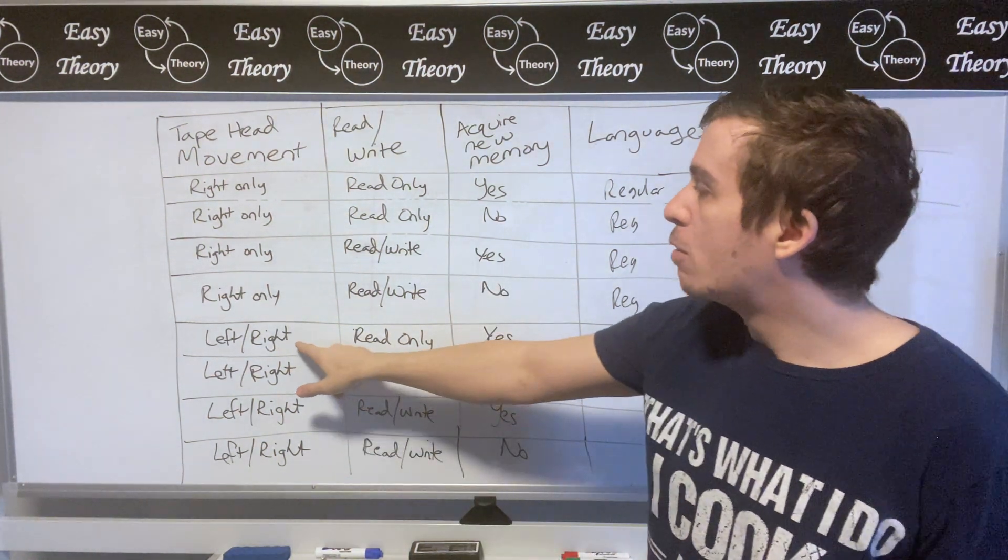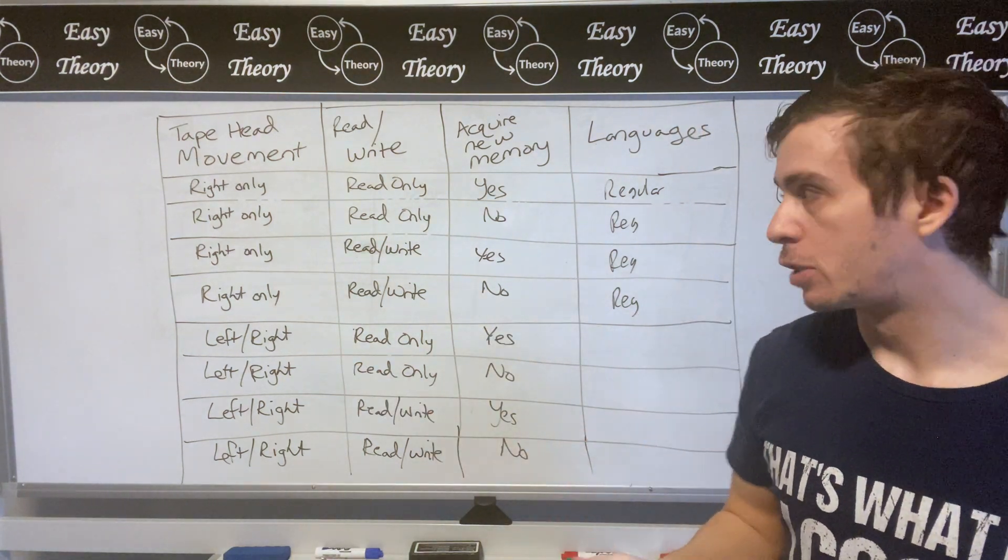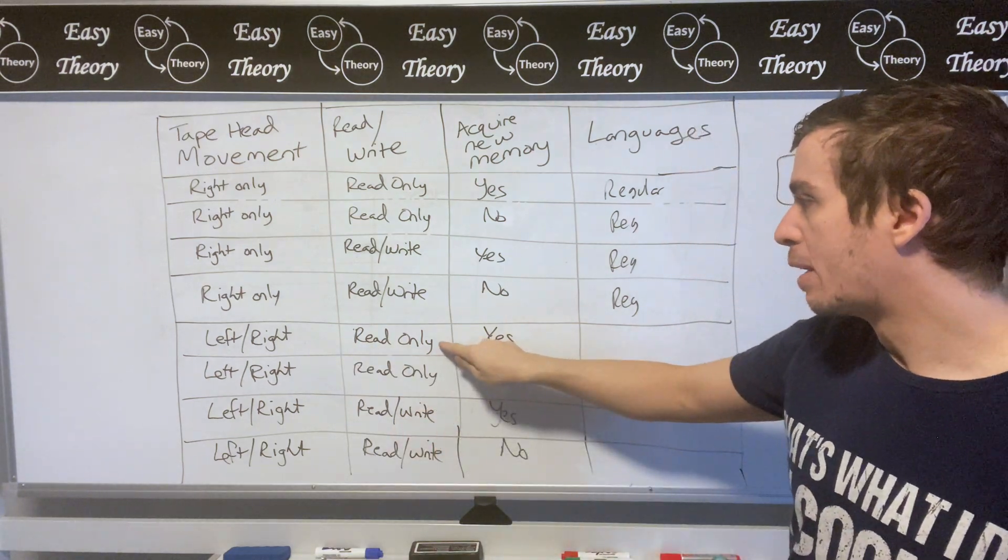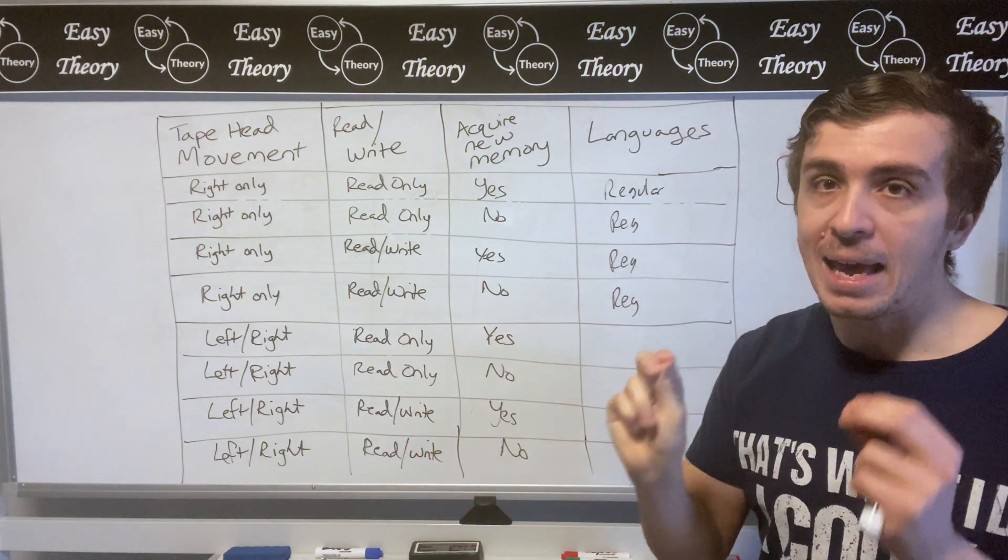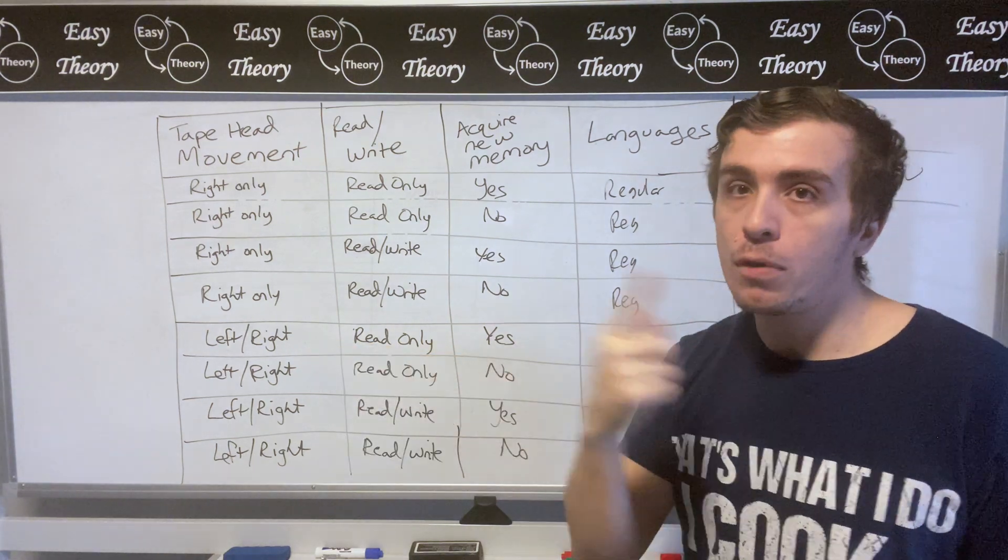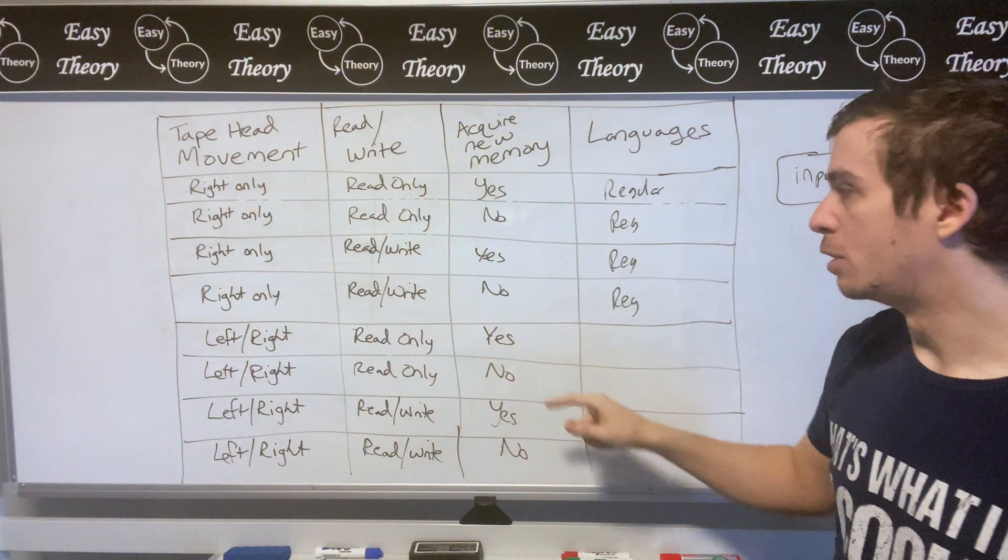So now let's think about when the machine can move left and right because that will actually start to change things. Well if we move left let's look at this one. So we can only read cells, we can't actually change any of the values in there, but we can move left and right and we can acquire new memory if we want to.